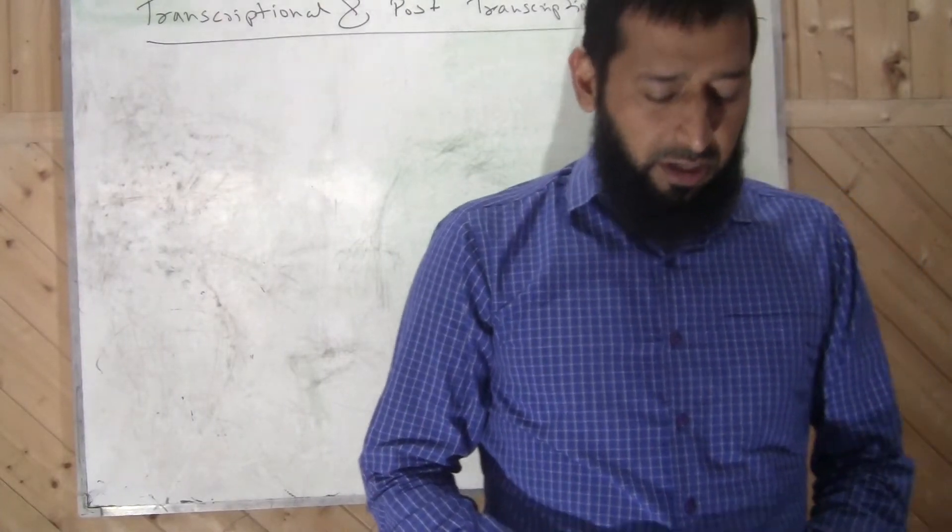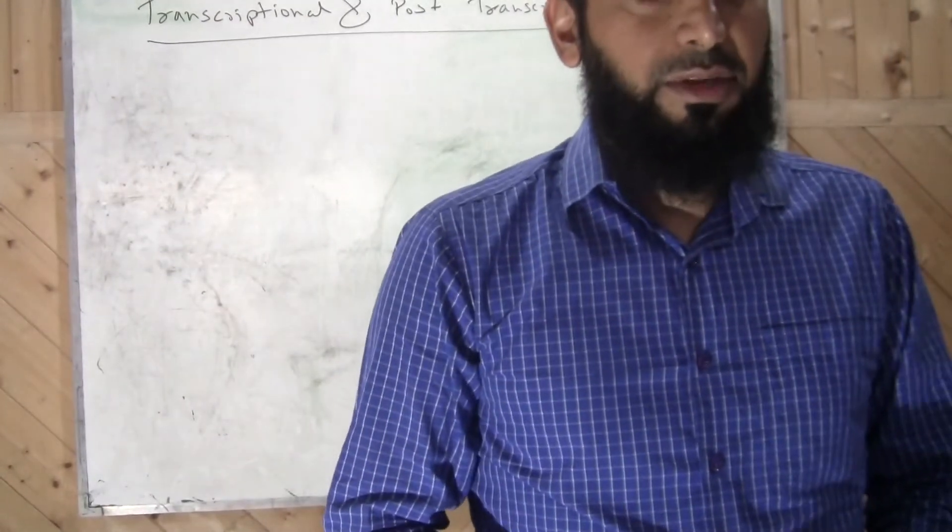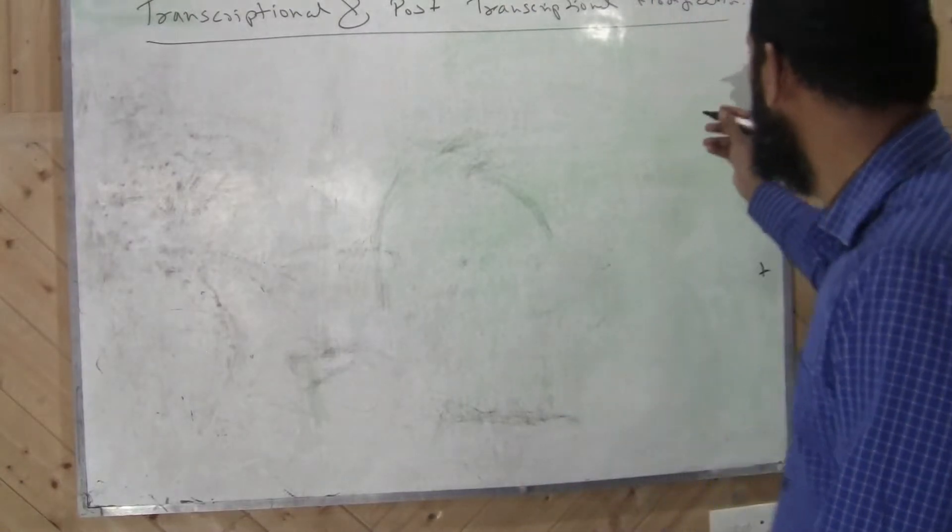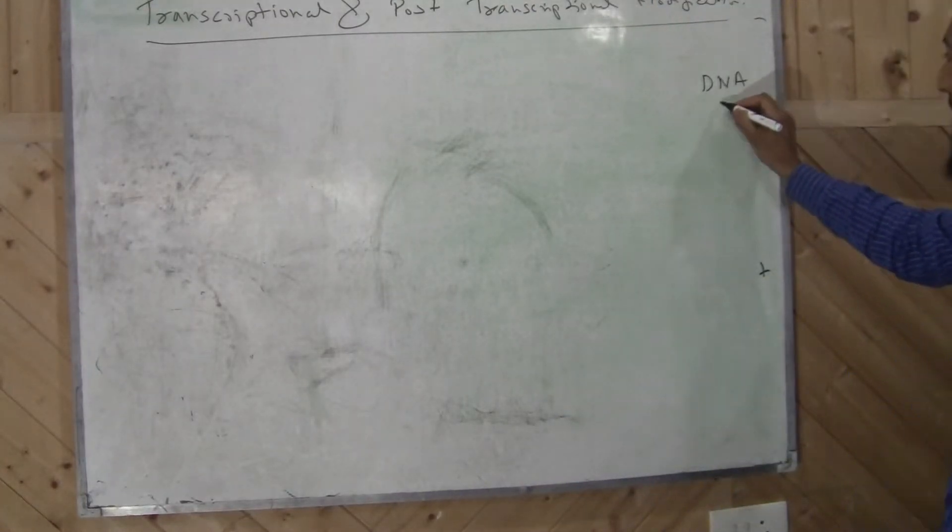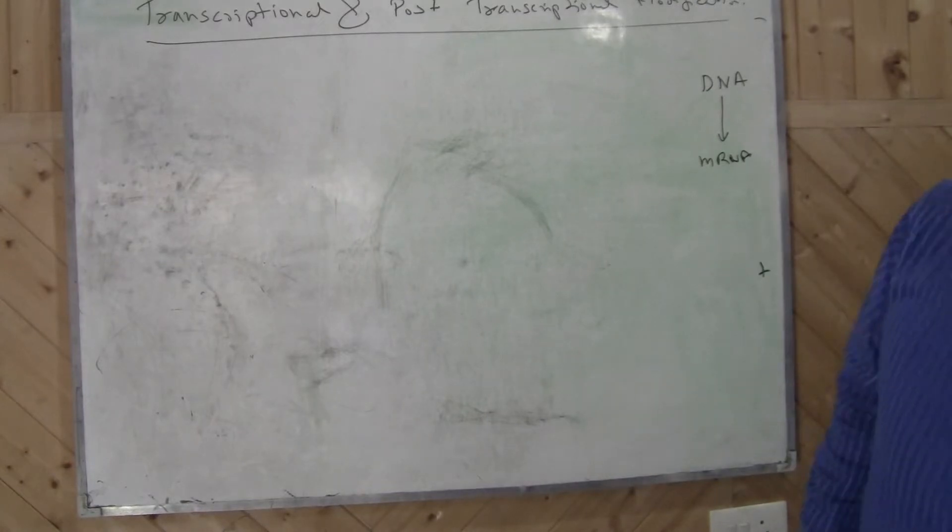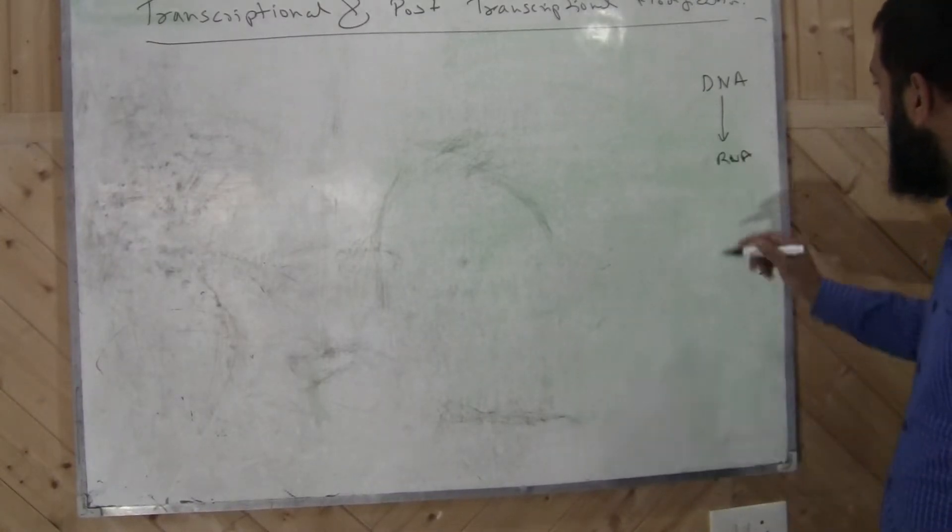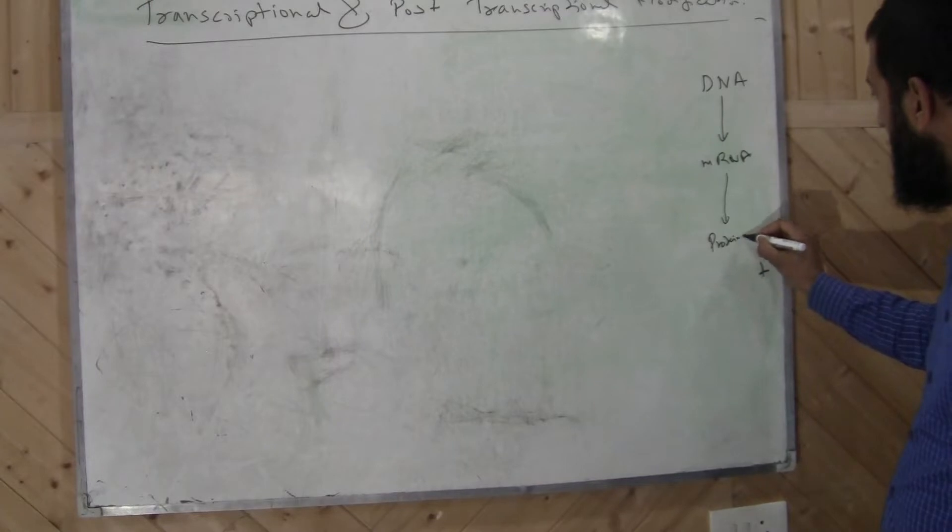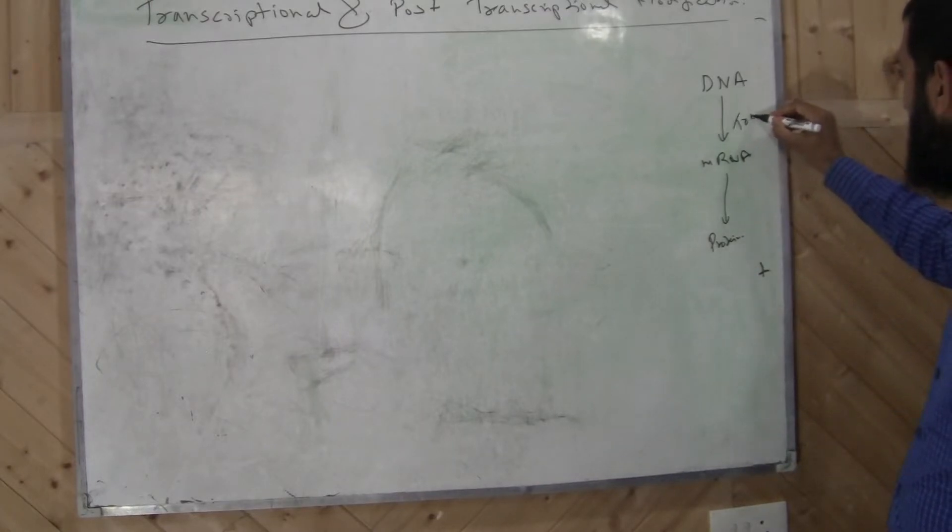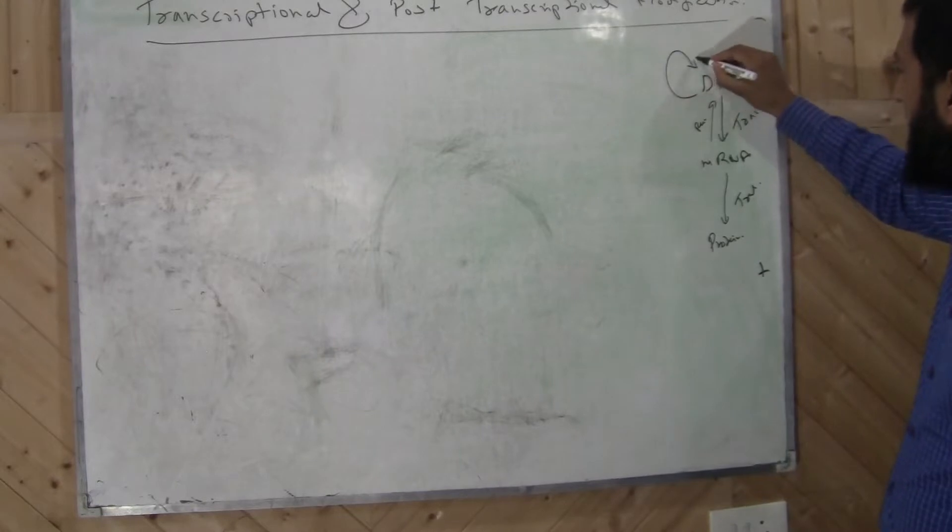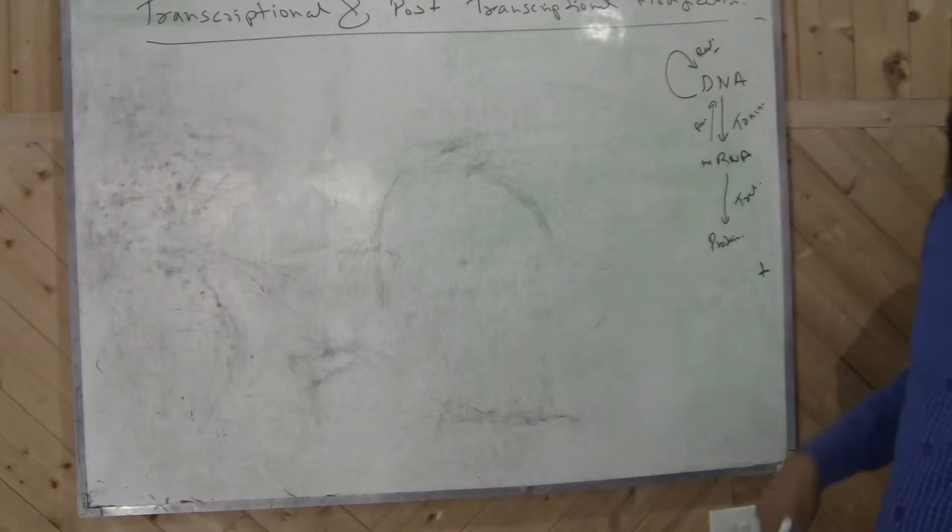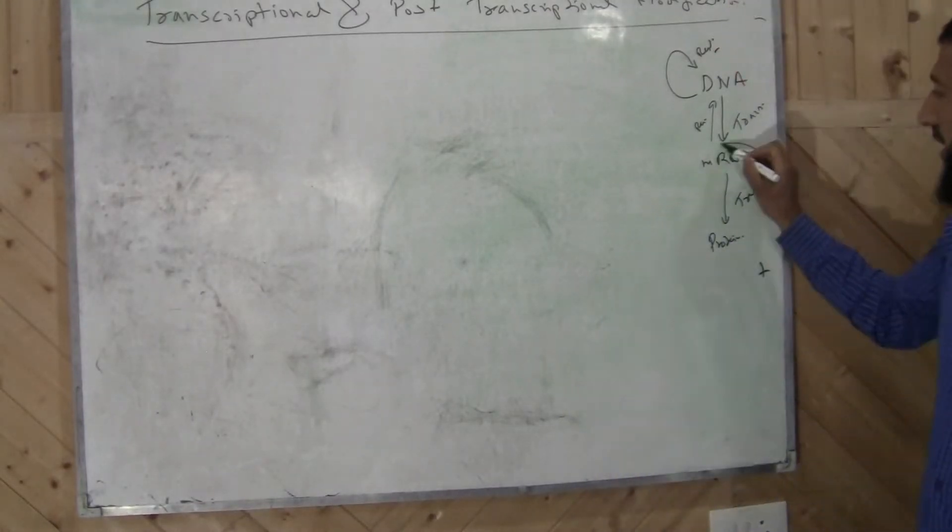So you must be aware of the central dogma of molecular biology that we have been studying so far. You have DNA that makes or transcribes RNA, and that makes proteins. This process is called transcription. This process is called translation. You have reverse transcription, then you have replication. These are the main steps of the central dogma of molecular biology, and here we are dealing with your RNA transcripts.